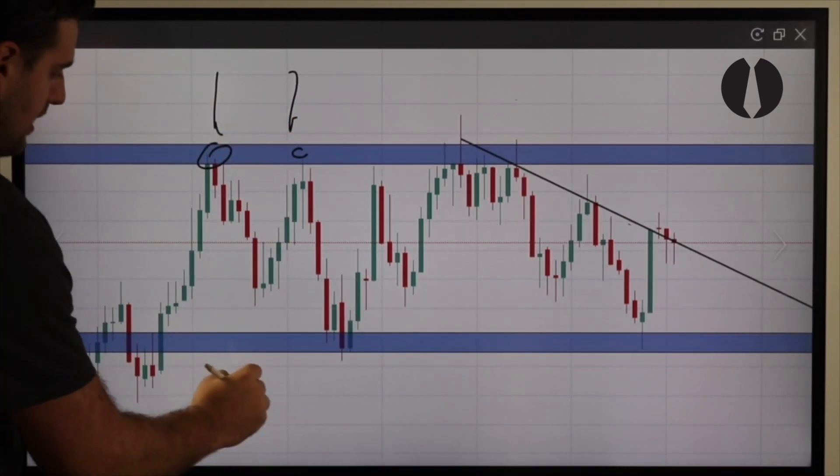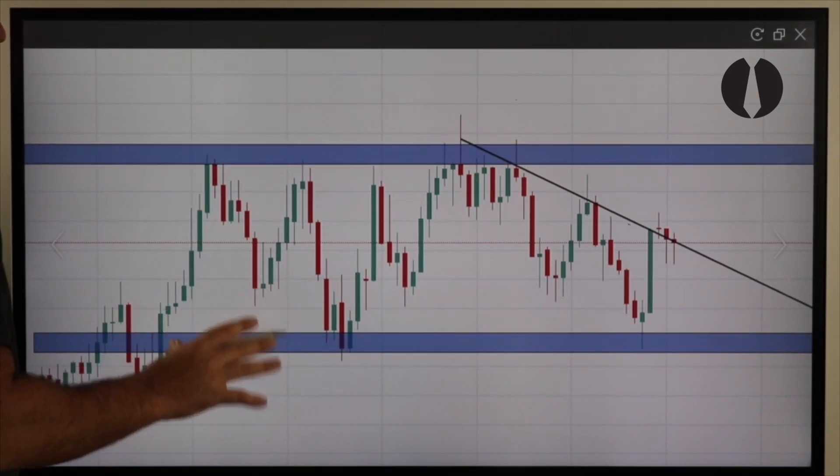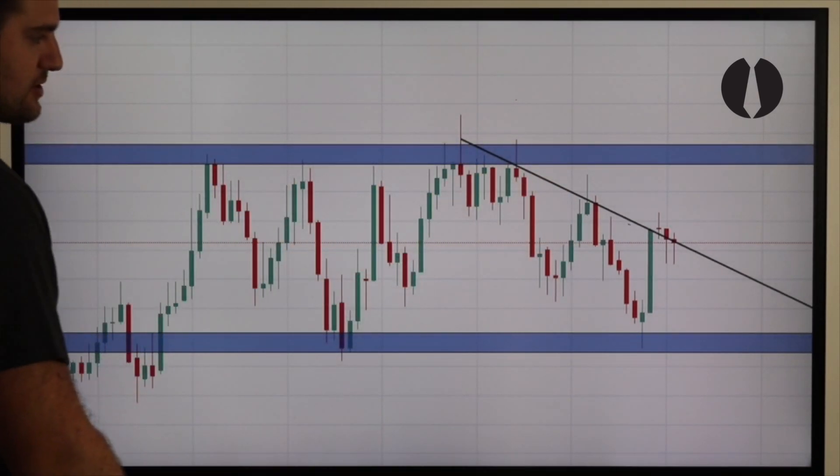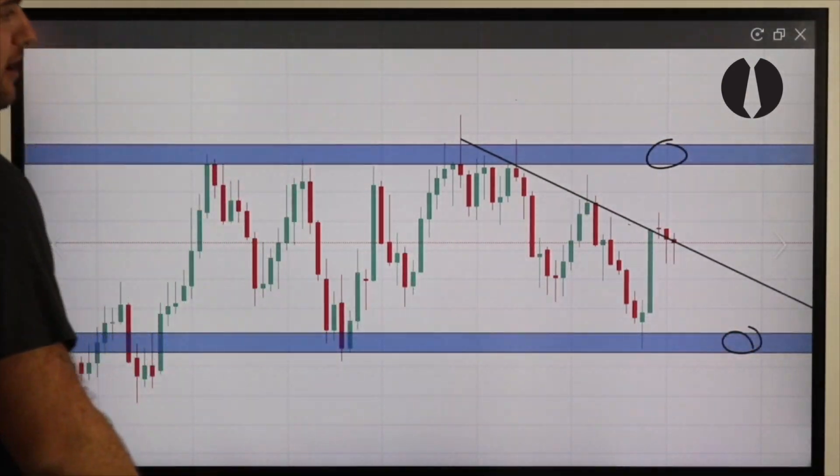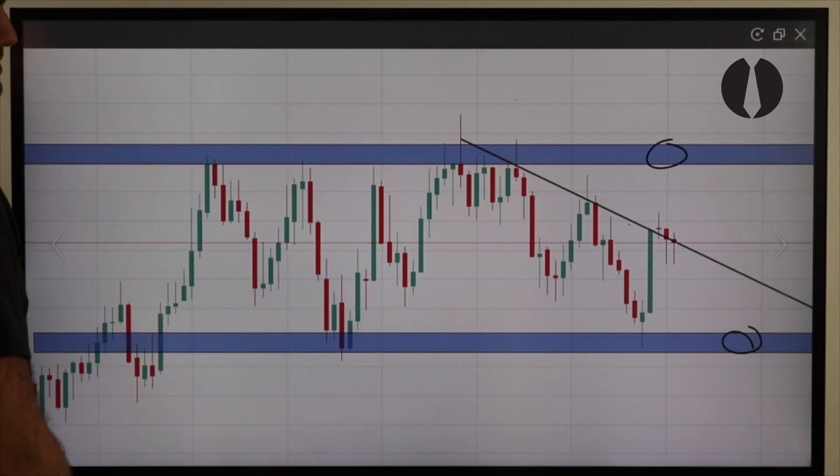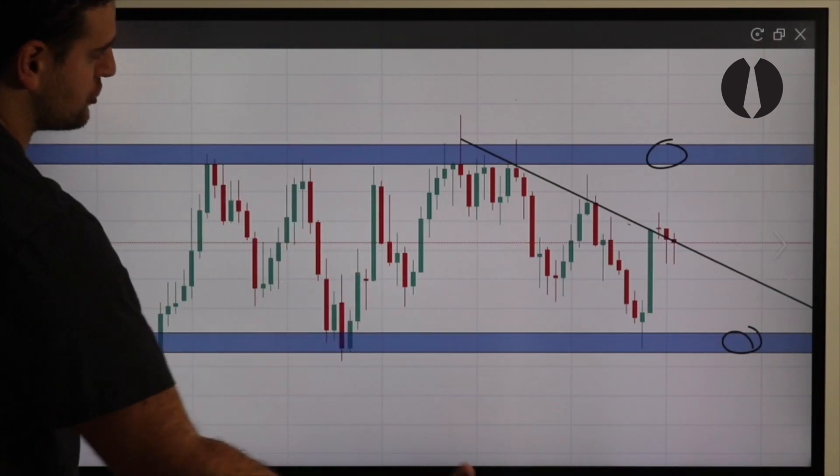What do we know for sure? Price is in a higher timeframe consolidation period, meaning that price is going to struggle to break above or below its monthly zones, and when it does we're going to see a strong move either to the upside or to the downside.